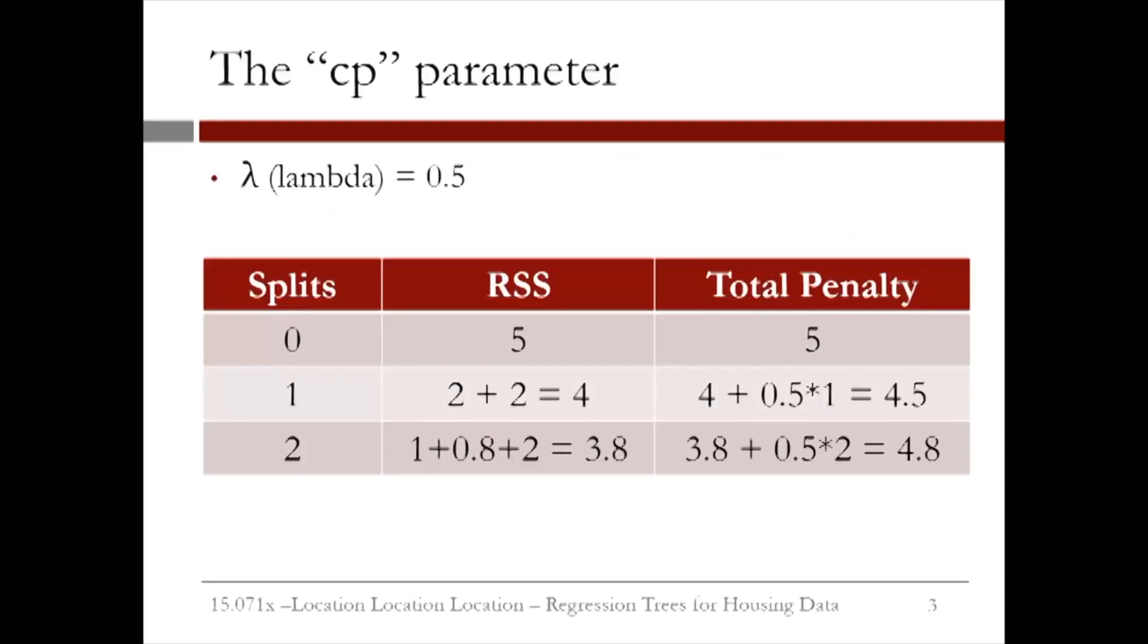Let us consider this following example. Here we have set lambda to be equal to 0.5. Initially we have a tree with no splits. We simply take the average of the data. The RSS in this case is 5, thus our total penalty is also 5. If we make one split, we now have two leaves. At each of these leaves, say, we have an error, or RSS, of 2. The total RSS error is then 2 plus 2 is 4. And the total penalty is 4 plus 0.5 times 1, the number of splits. Our total penalty in this case is 4.5.